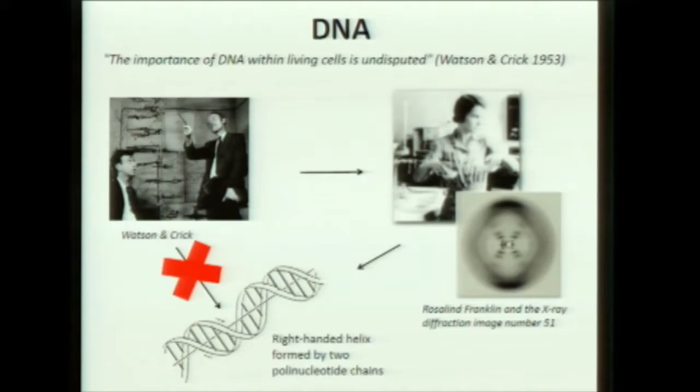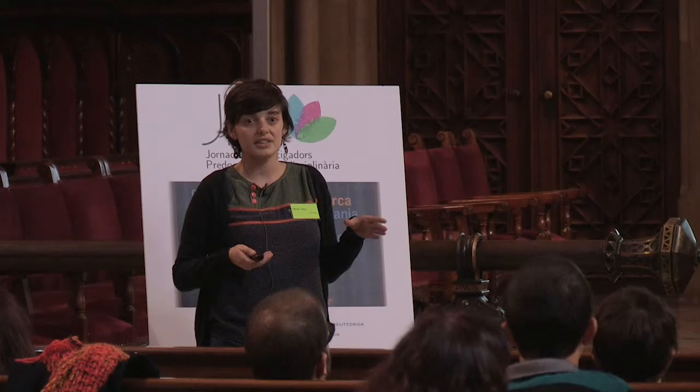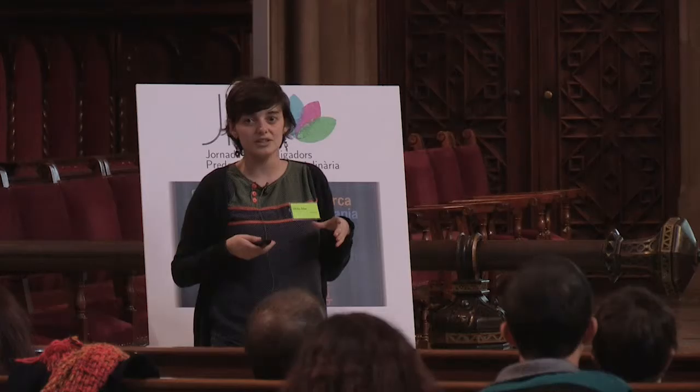I would like to start by talking about the DNA structure. Watson and Crick published this structure in 1953 and, thanks to Rosalind Franklin's X-ray diffraction images, they concluded that the DNA molecule is a right-handed helix formed by two polynucleotide chains.